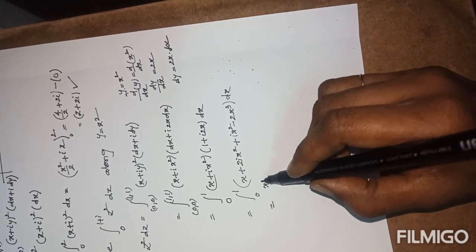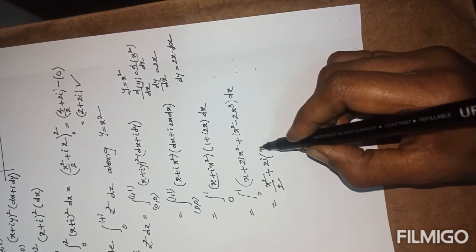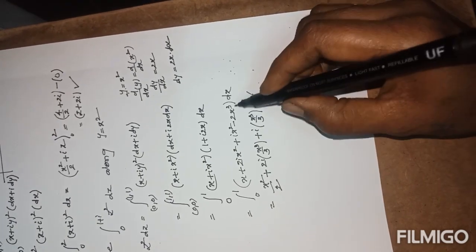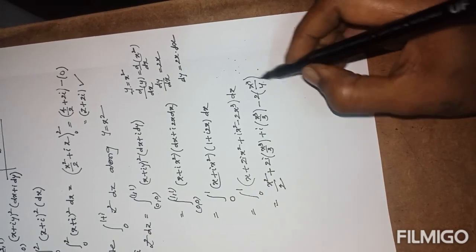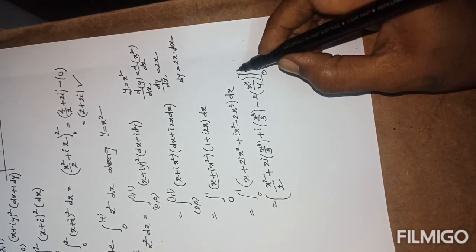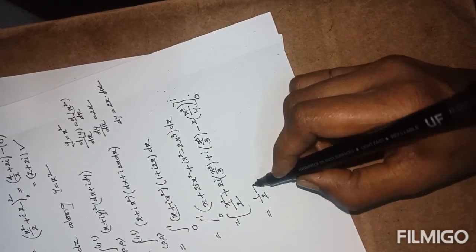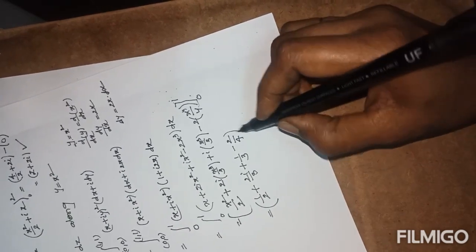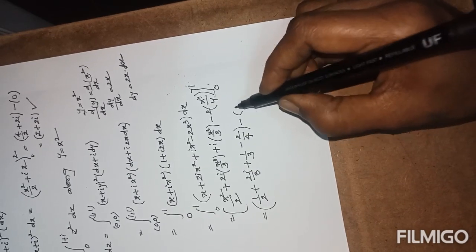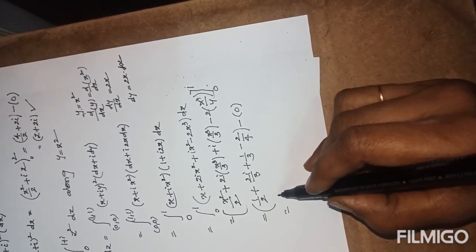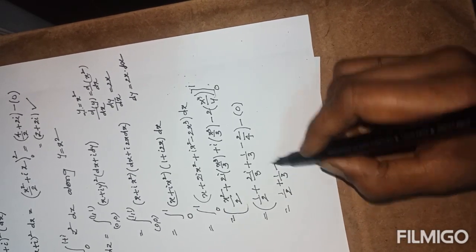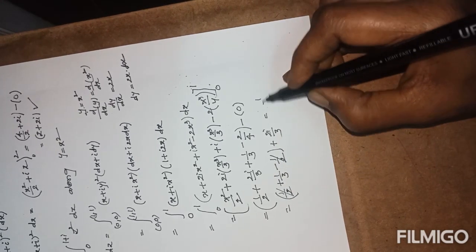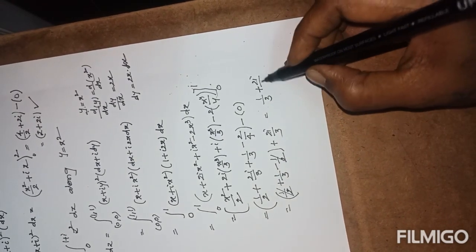The integral becomes ∫₀¹ (x + ix²)² times (1 + 2ix) dx. Expanding and collecting terms: integration of x gives x²/2, plus 2i times x³/3, plus i times x³/3, minus 2i times x⁴/4 (since i² equals minus 1). Applying limits 0 to 1: the result simplifies to 1/3 plus 2i/3, using the real and imaginary parts after cancellation. This is the final result of the given question.